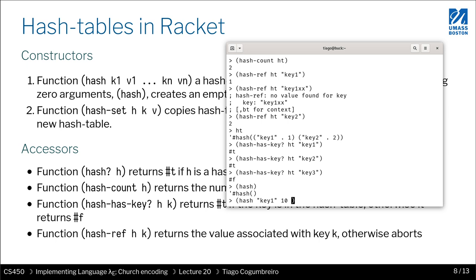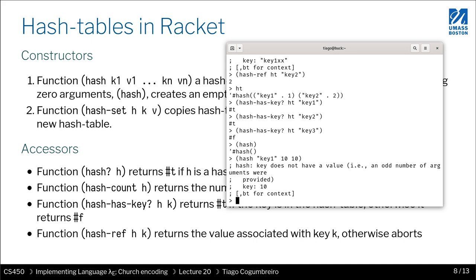And what happens if I just pass three values instead of an even number? As you might imagine, that should give you an error. So it's saying that there is a key here, which is this number 10, that doesn't work because you have to do pairs. So you have to have an even number of arguments in this function. So this takes care of how you create a hash table by specifying all the elements.